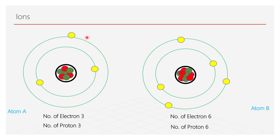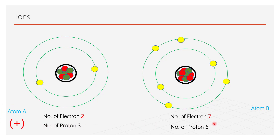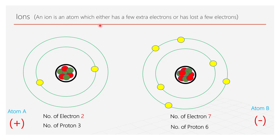Atom A donates one electron to atom B. After donating one electron, atom A has two electrons and three protons, while atom B has seven electrons and six protons. Because atom A has more positive charge than negative charge, atom A is called a positive ion. On the other hand, because atom B has more negative charge than positive charge, atom B is called a negative ion. So an ion is an atom which either has gained a few extra electrons or lost a few electrons.